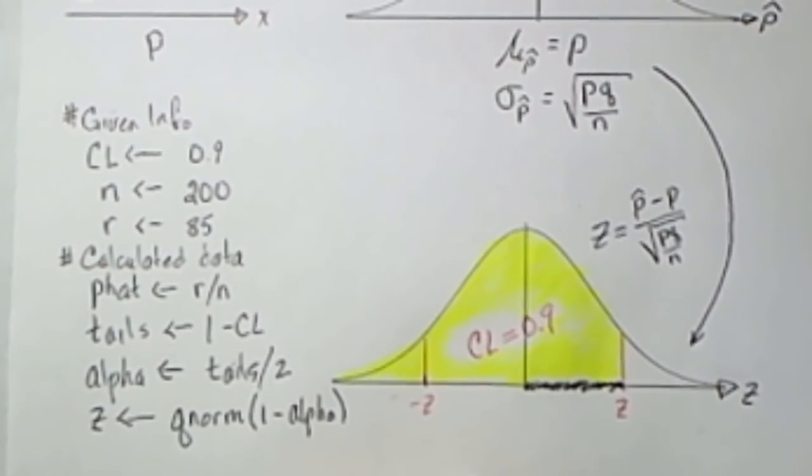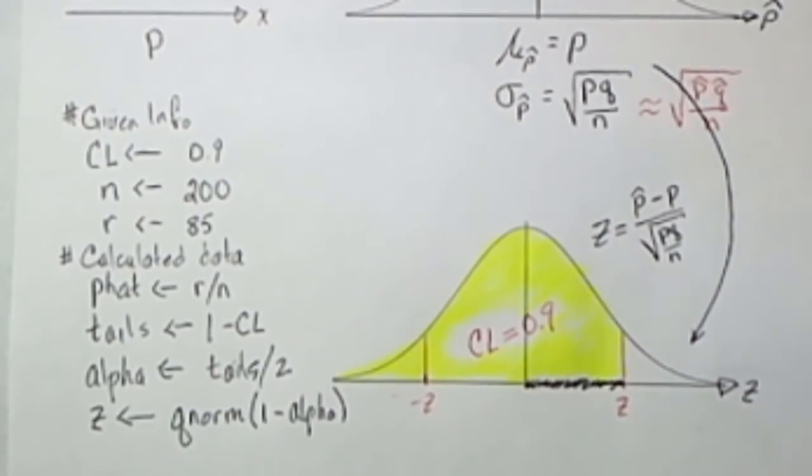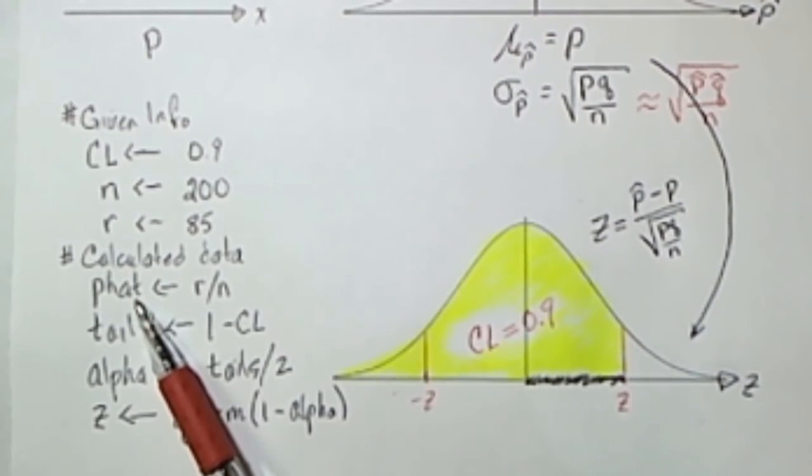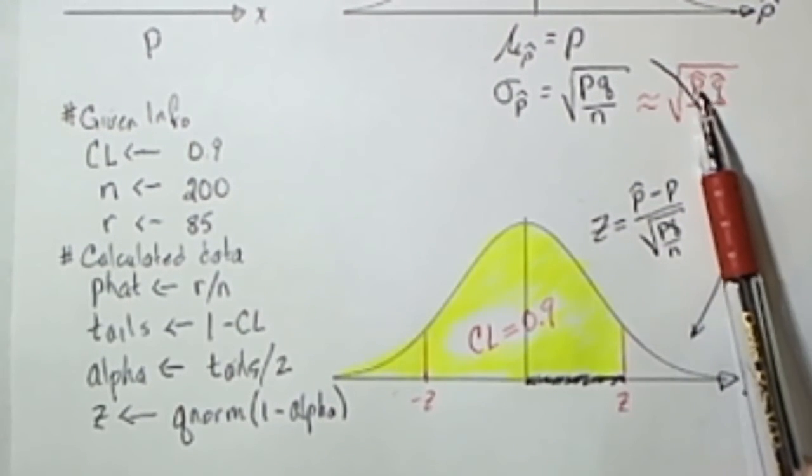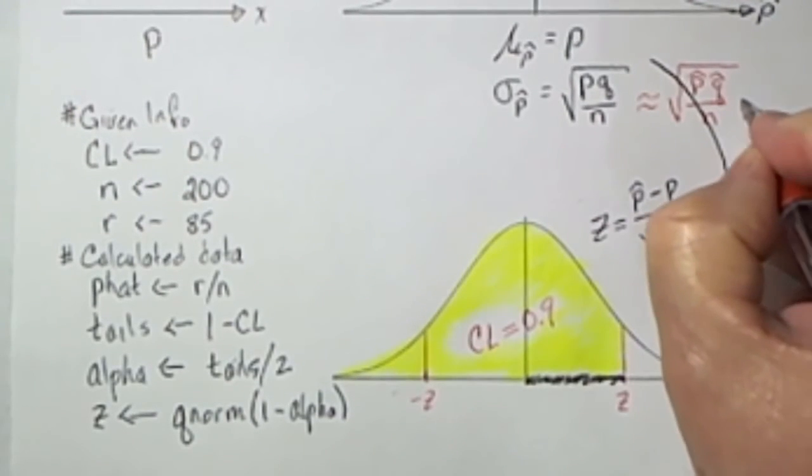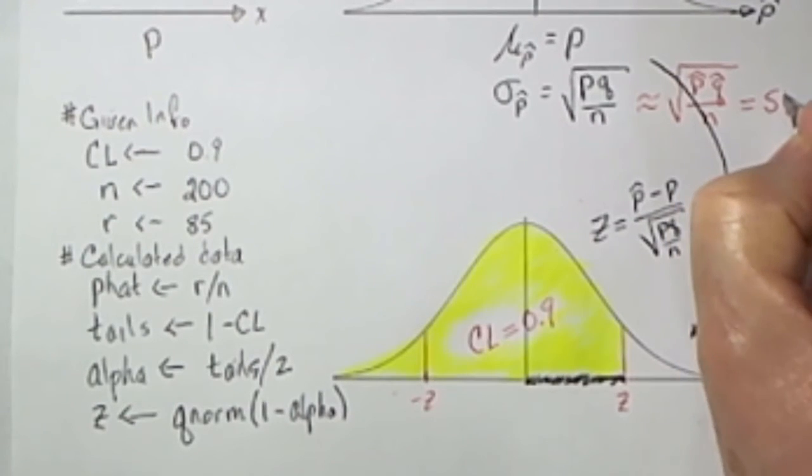However I could approximate it by using P hat and Q hat. I've already calculated P hat in my script so I'll need to calculate Q hat and then I'll be able to get this approximation which we will call a standard error.